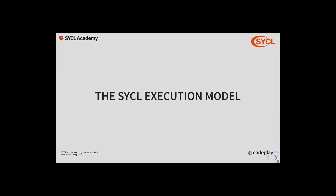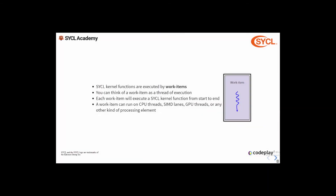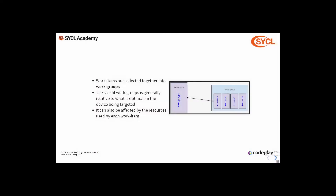Starting with the SYCL execution model: in SYCL, kernel functions are invoked on what are referred to as work items. You can think of a work item as a thread of execution — it will execute a kernel function from start to end. A work item can run on a CPU thread, a SIMD lane, a GPU thread or any other kind of processing element, depending on the kind of SYCL device you're targeting. SYCL kernel functions are generally invoked on a number of work items in parallel, and these work items are grouped together into what is referred to as work groups. The size of a work group is generally relative to what is optimal for the device you're targeting, but can also be affected by the resources used by each work item. Choosing the best work group size is often a key optimization for SYCL applications as it ensures optimal occupancy on the target device.